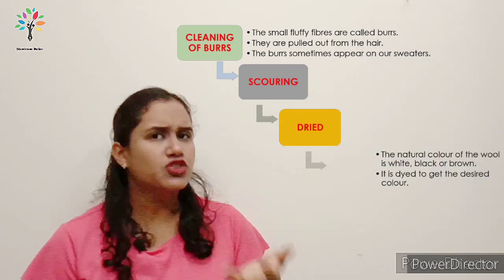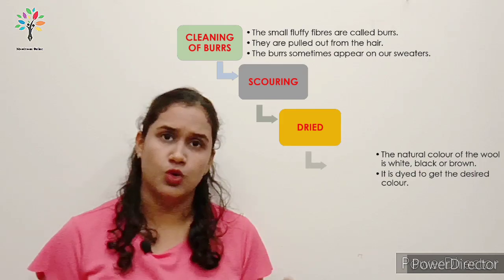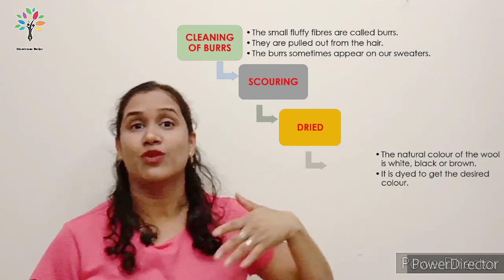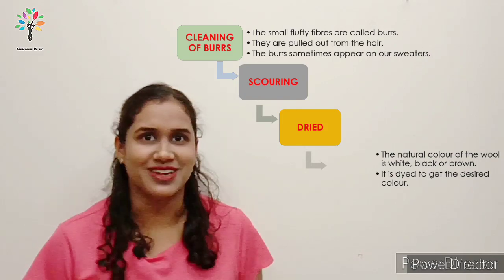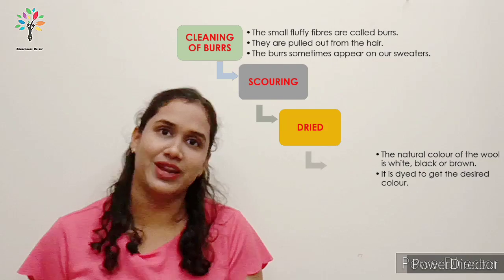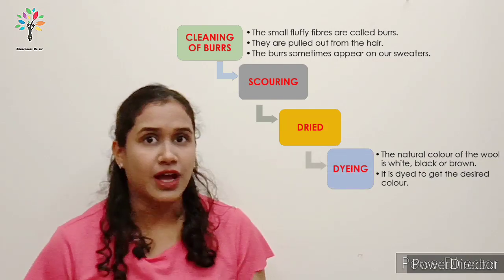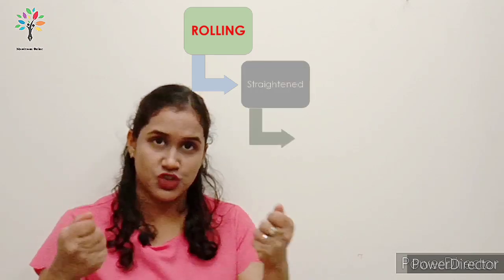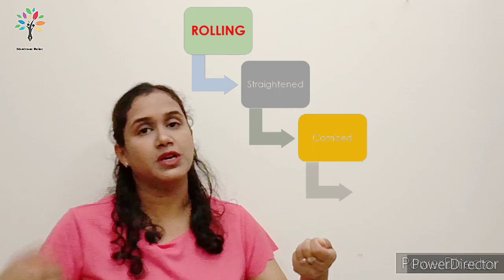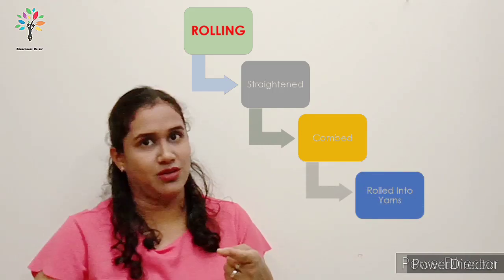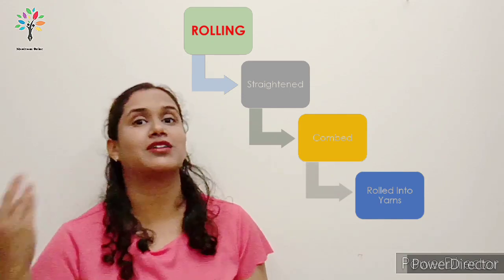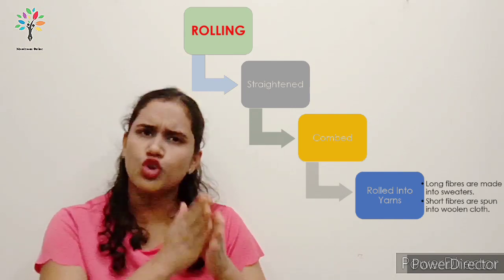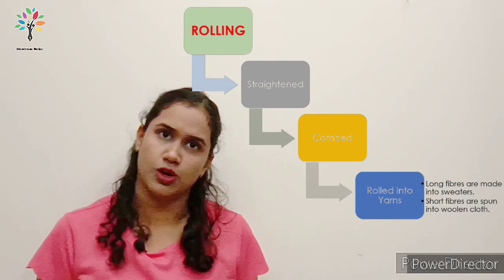After cleaning, we do dyeing. The natural color of wool is white, brown, or black, but we dye the hair in different colors to get the required color. The last step is rolling — we straighten the fibers, comb them so there are no knots, and then roll them into yarn. The long hair is used to make sweaters, and the short hair is spun into woolen cloth.